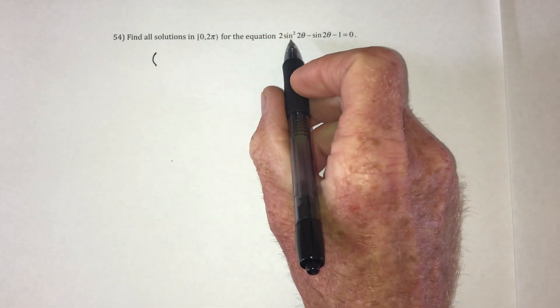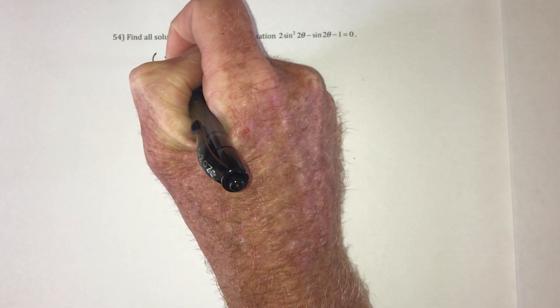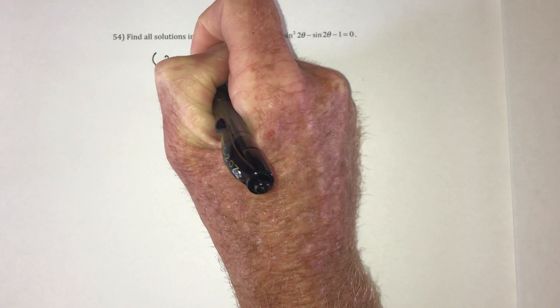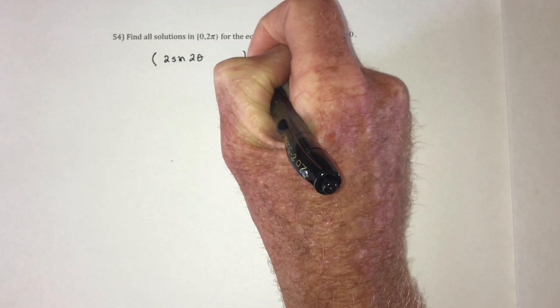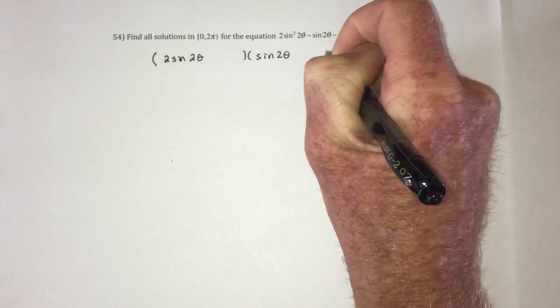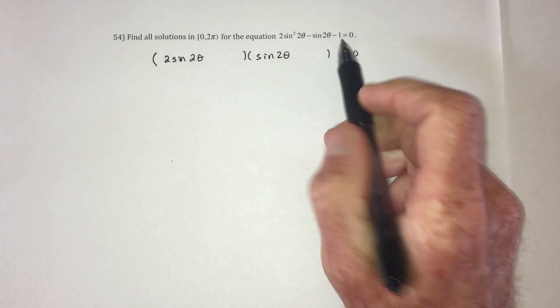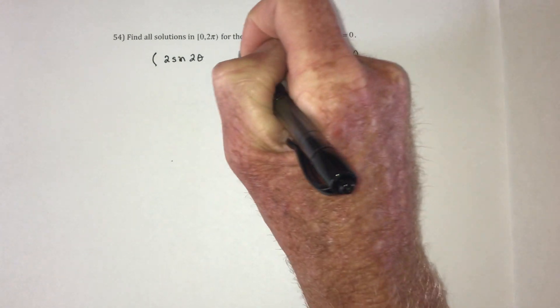Let me try and see if I can factor it. So in order to get 2 sine squared, I would need 2 sine of 2 theta times another sine of 2 theta. And in order to get a 1, that would be 1 times 1.